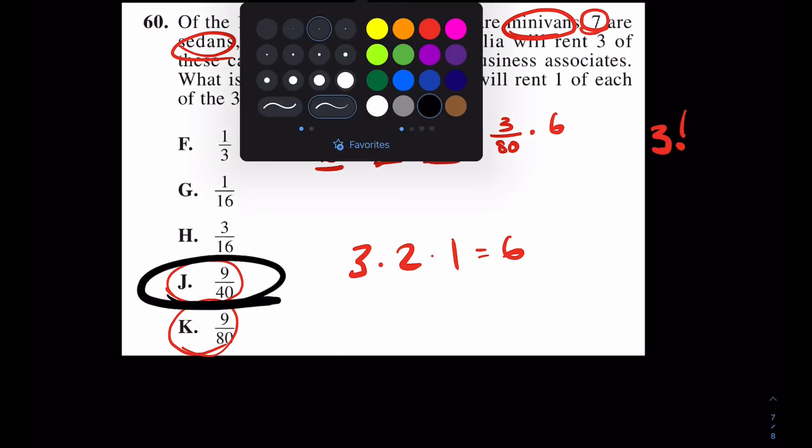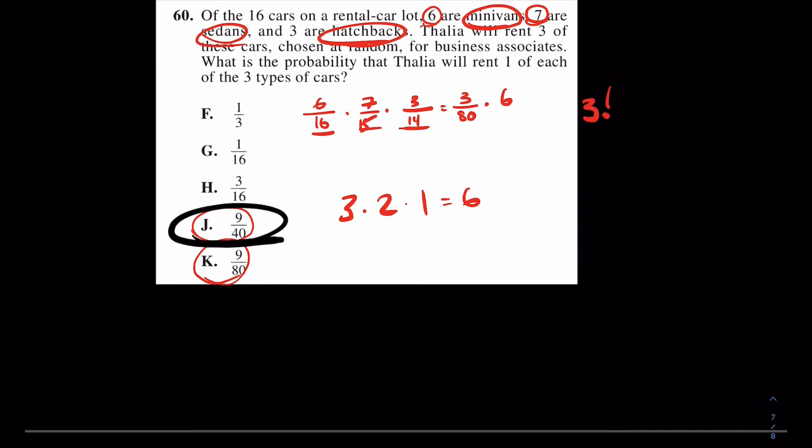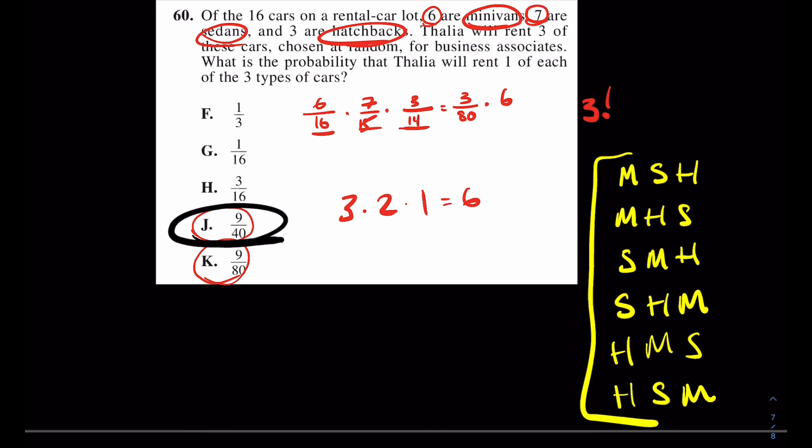Now, to be completely honest, if you were to do this a different way, in other words, count the different combinations, you could do that too. In other words, there's minivan, sedan, hatchback. There's minivan, hatchback, sedan. There's sedan, minivan, hatchback. There's sedan, hatchback, minivan. There's hatchback, minivan, sedan, hatchback, sedan, minivan. I'm starting to lose my mind. But as you can see, how many different permutations are there here? Oh, there's actually six. There's no more. So, if you didn't realize to use factorial, which, to be honest, most high school students, I would have never thought of as a high school student to use, you could just sit there and manually count them up. This is a number 60, so yes, you do have a little extra time to work with this. But that's how we would work through number 60. Really, it would be 3 80ths times the six different permutations that it could exist.